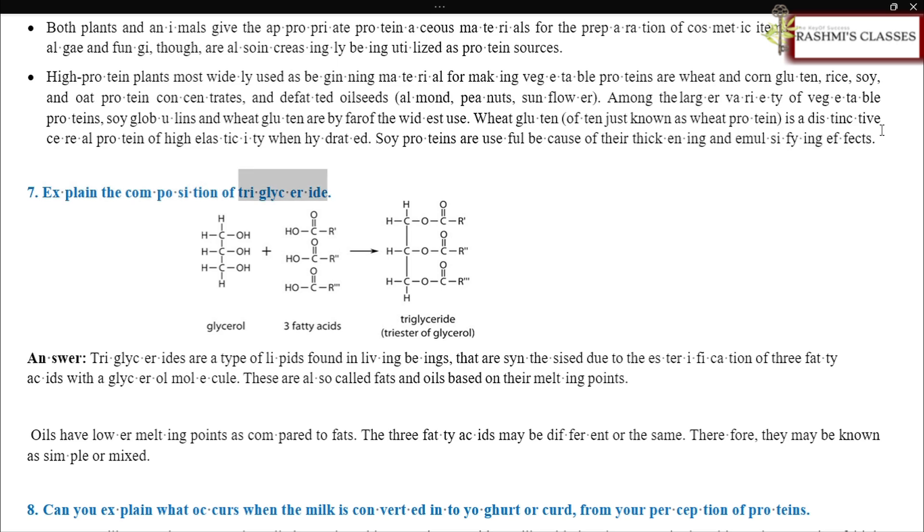Explain the composition of triglyceride. Triglycerides are a type of lipids found in living beings that are synthesized due to the esterification of three fatty acids with a glycerol molecule. These are also called fats and oils based on their melting points. Oils have lower melting points as compared to fats. The three fatty acids may be different or the same. Therefore, they may be known as simple or mixed.